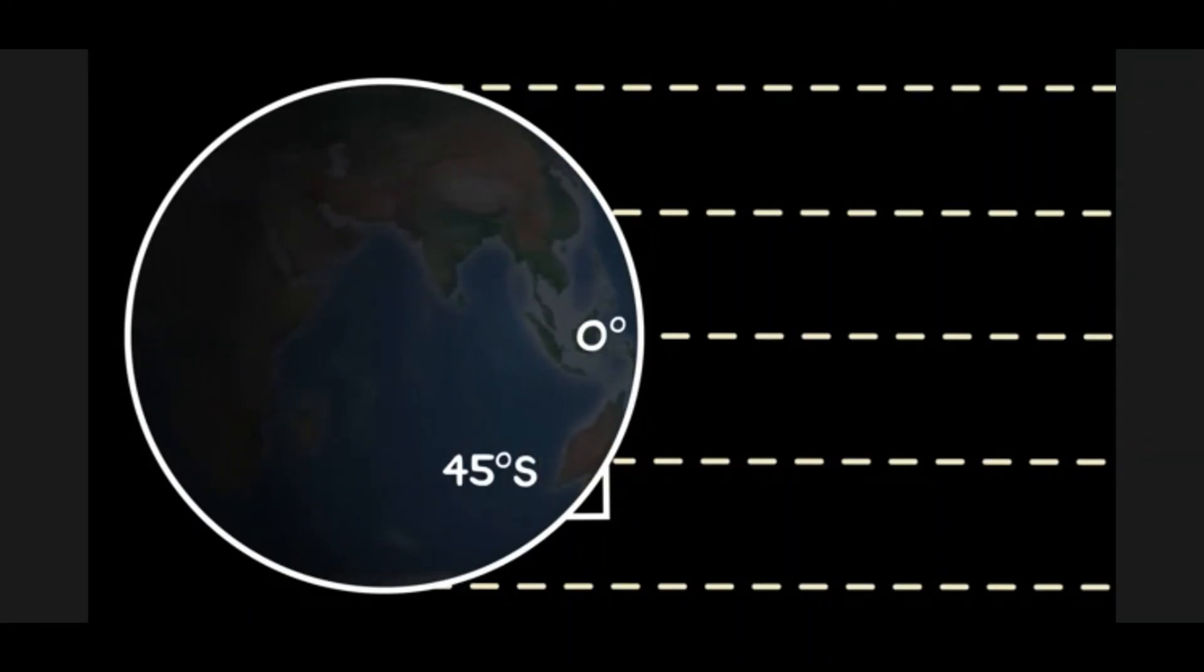Conversely, slope aspects facing away from the sun receive minimal solar radiation when their slope angle equals the latitude of their location.